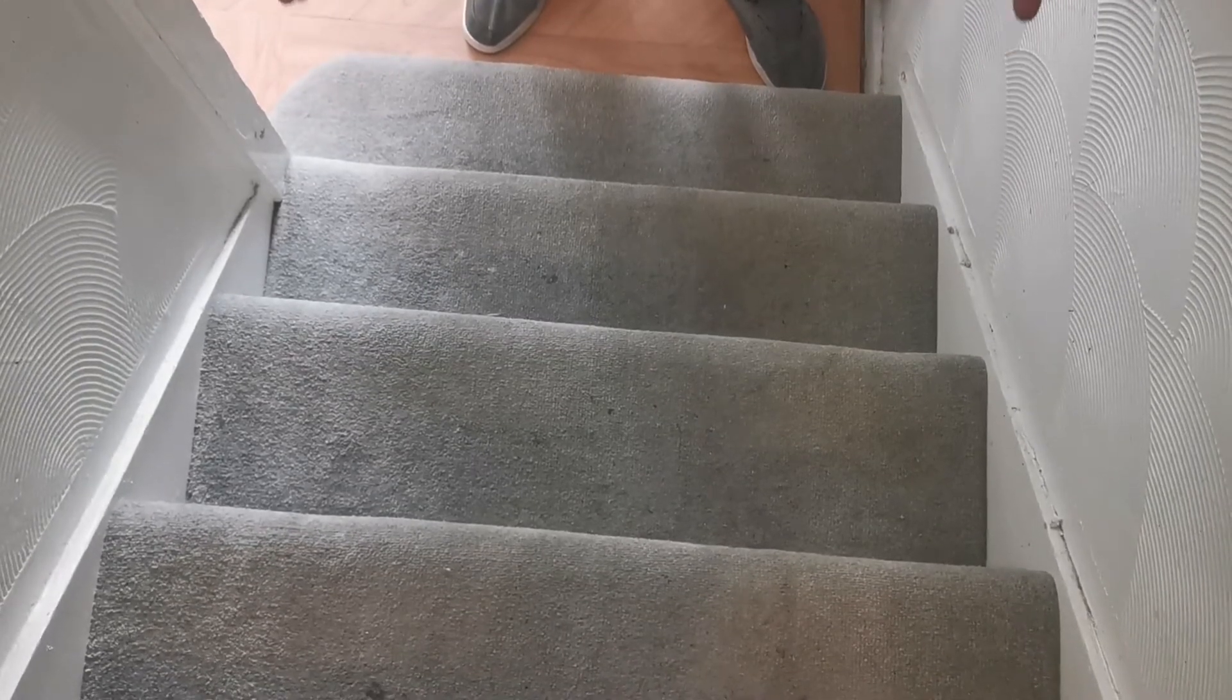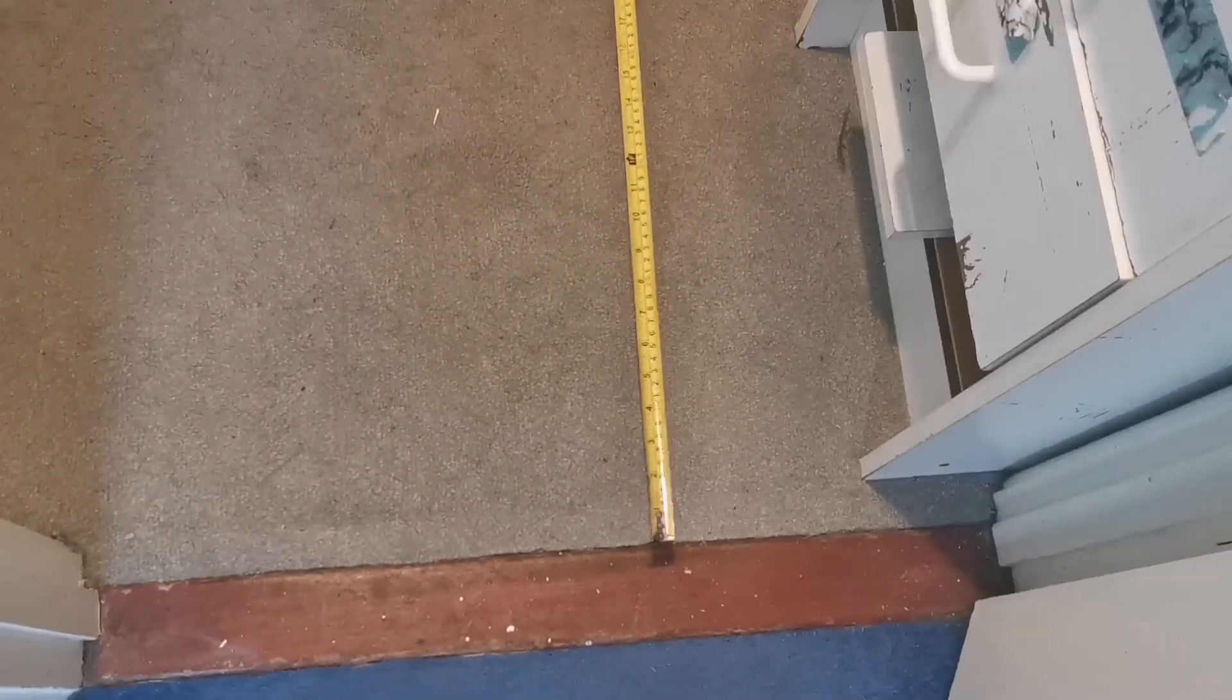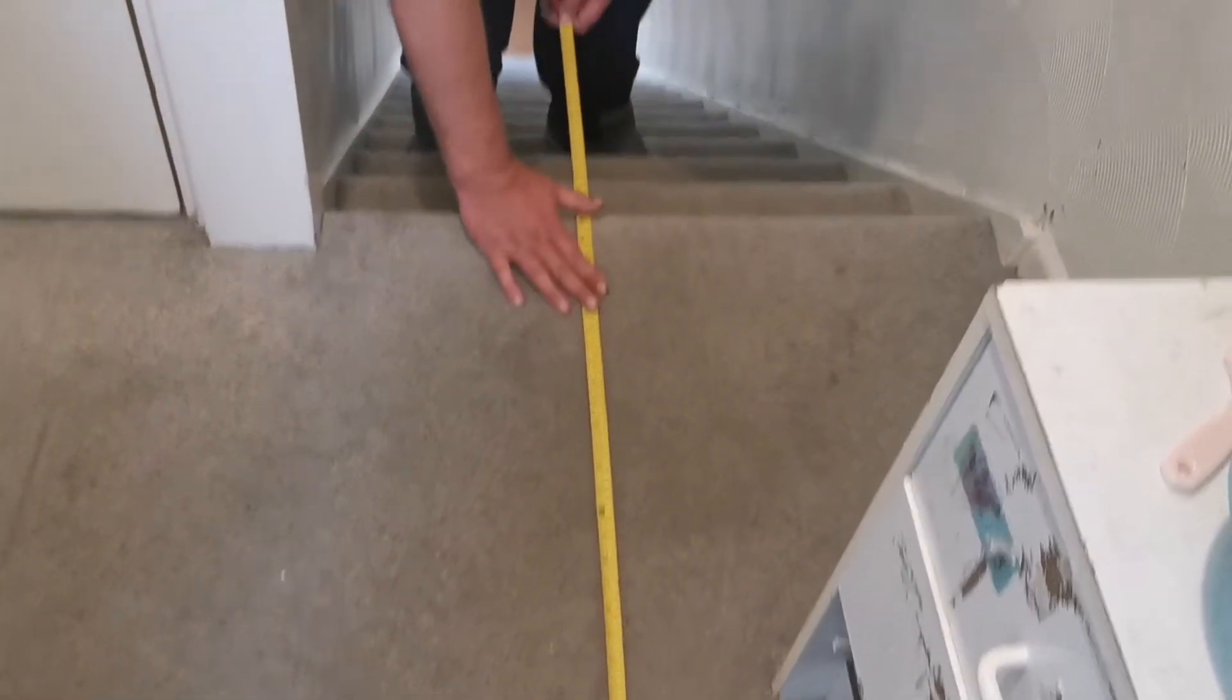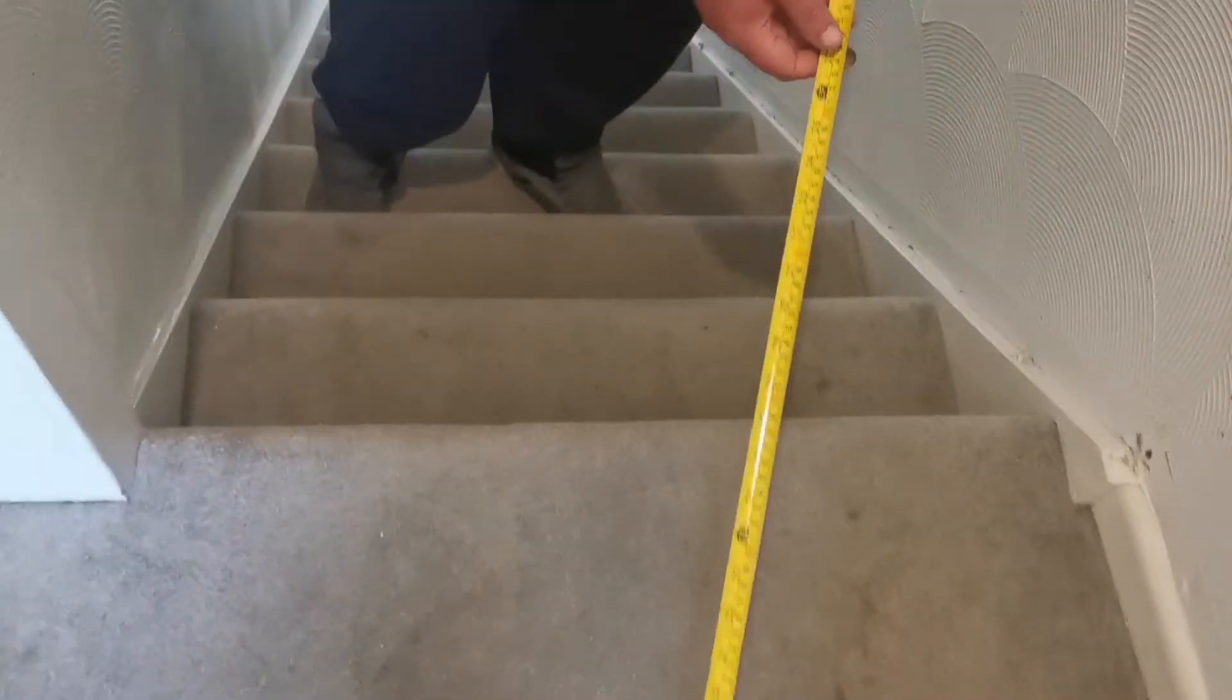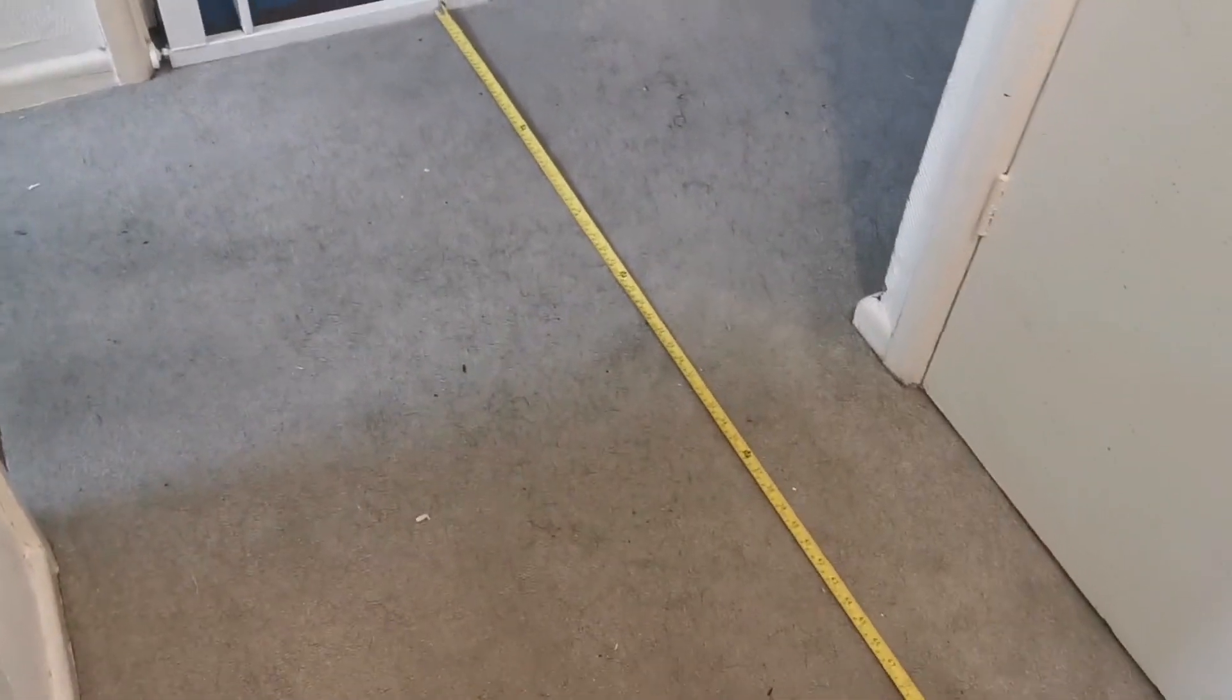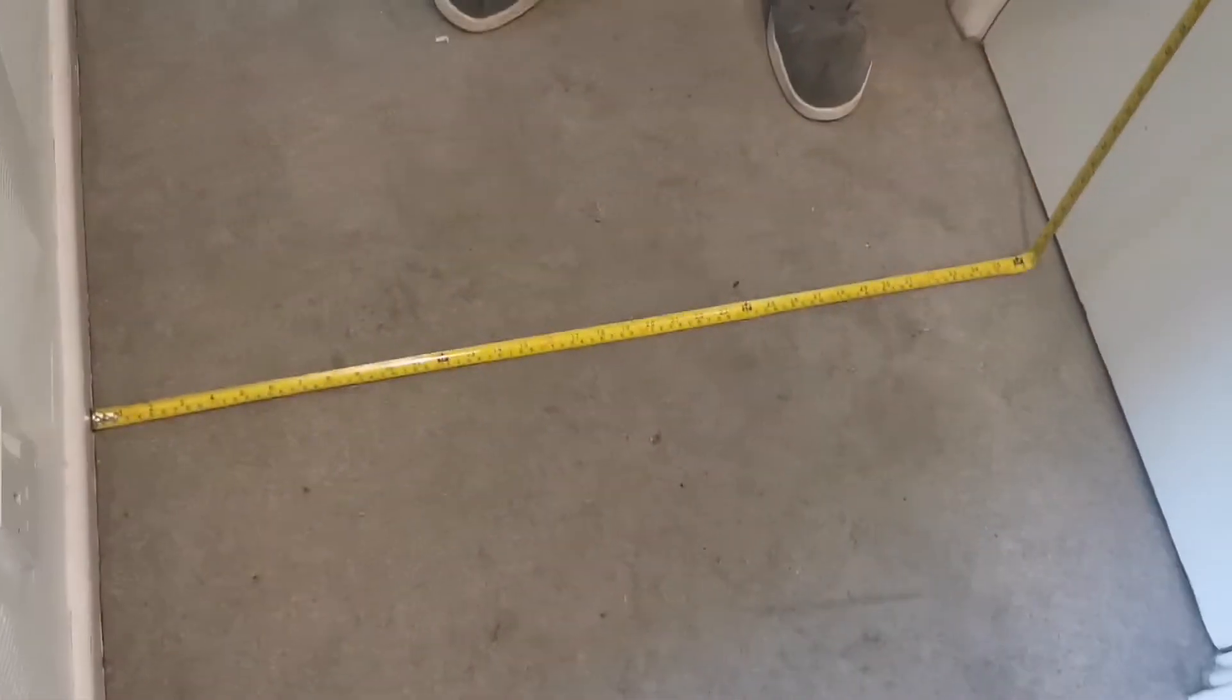Now we have the landing. Measure from the doorway - remember people always forget about the carpet overlap here. You have to allow the carpet plus the riser, and that is 1.2 tight for me, 1 meter 200. On this part we measure the whole width down to here, and that is 2.6.